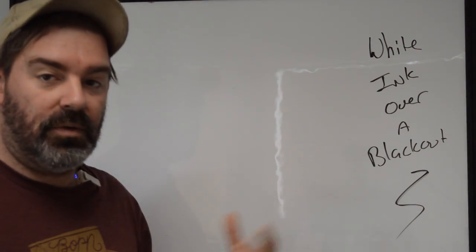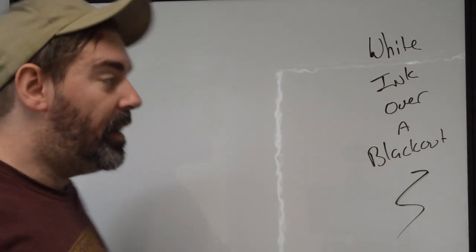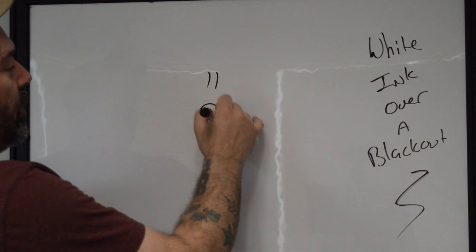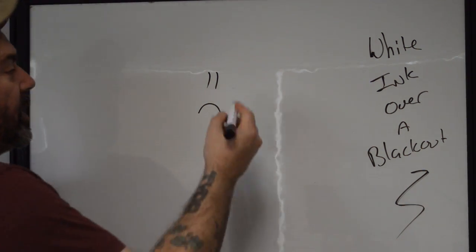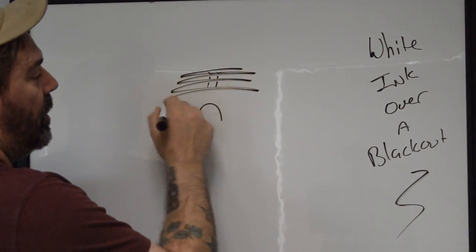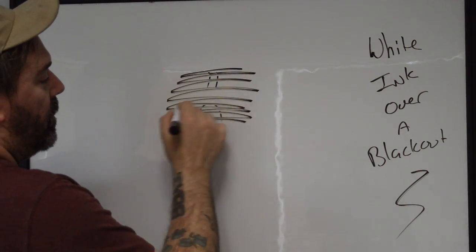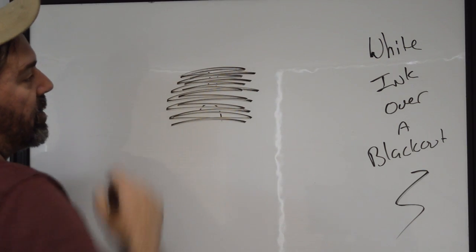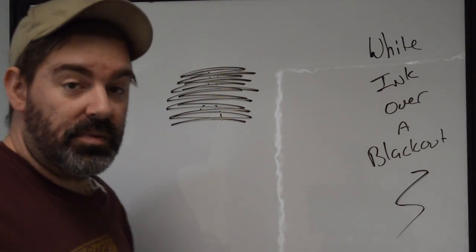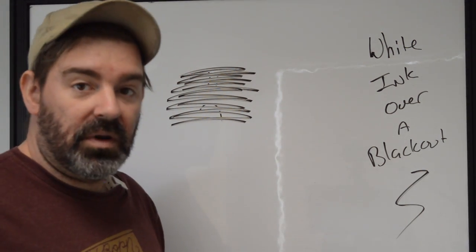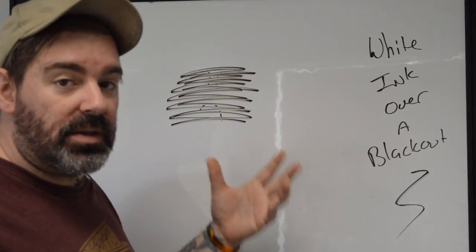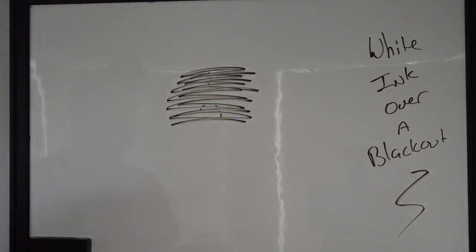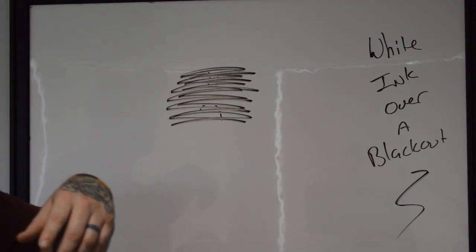Usually what's going to happen when we do a blackout tattoo is you have something that's there that you don't like. So what we're doing is we're taking that tattoo that we don't like and we are covering it with black. You can see our other videos about light interactions with pigments. What we're doing is we're putting something on that's absorbing light energy and making it so that nothing is passing through.